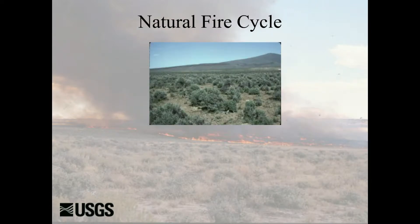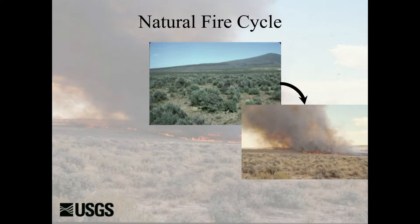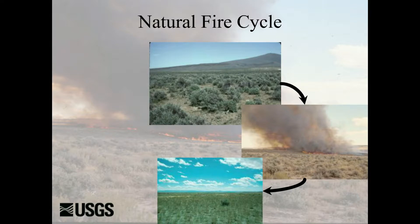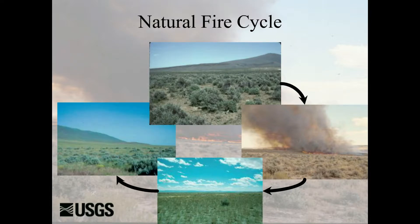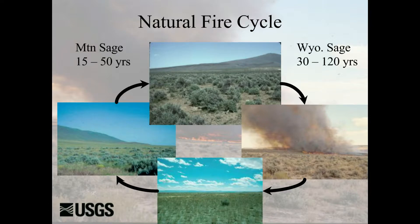Within sagebrush systems, our natural fire cycle tends to move through the sagebrush-dominated area. Fire comes through, we end up with a bunchgrass-dominated site, and then ultimately a mixture of sagebrush and bunchgrasses. Within the two subspecies of big sagebrush, that cycle can occur every 15 to 50 years for mountain big sagebrush sites, but 30 to 120 years for Wyoming big sagebrush sites. That's a big difference in what we'd expect to see — these systems are going to behave differently and have different potential.